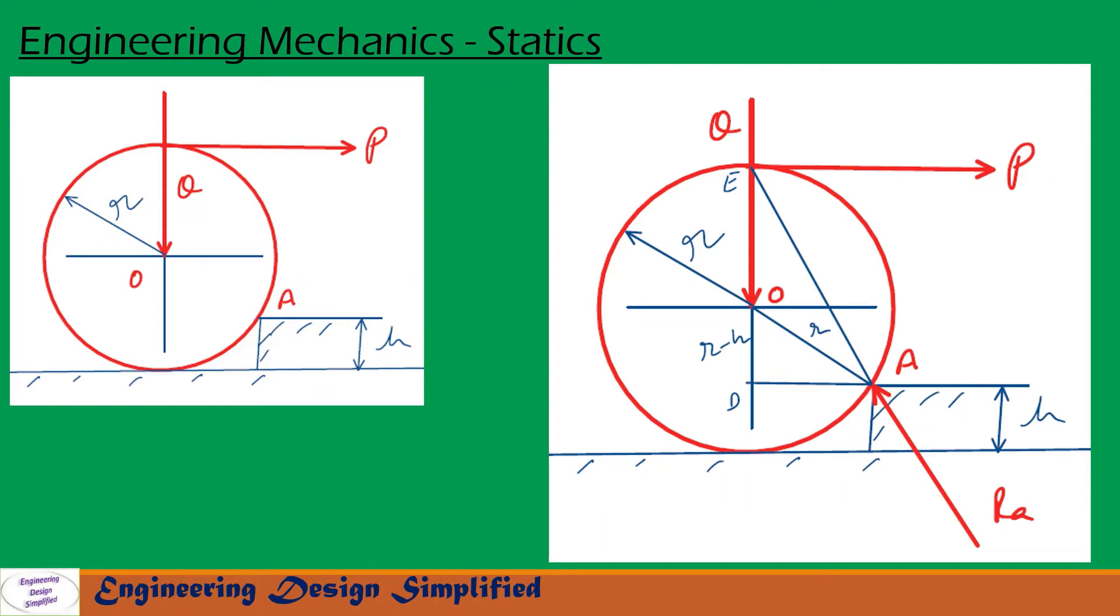First, let us see forces and reactions. The weight of the roller Q is acting downwards at the center of the roller, and load P is applied tangentially in this direction. The reaction at point A, RA, is acting in this direction, and a line extended along RA must meet at point E.